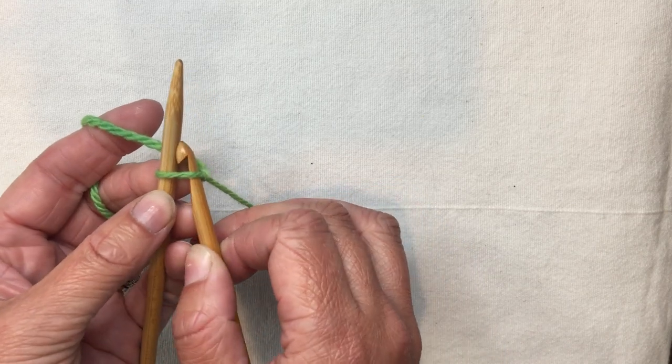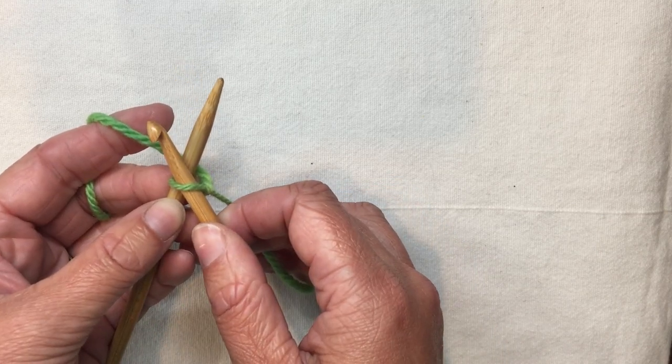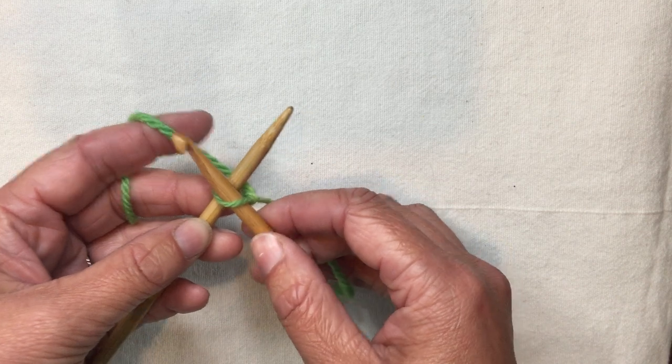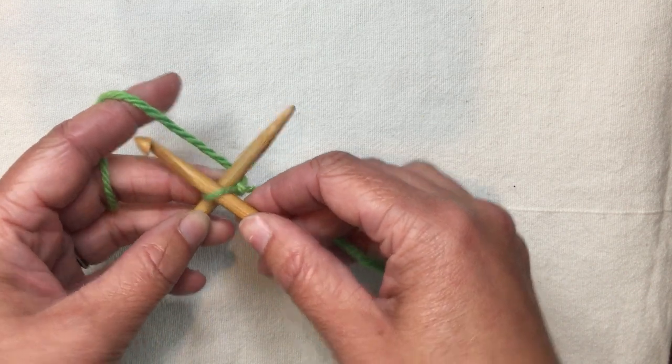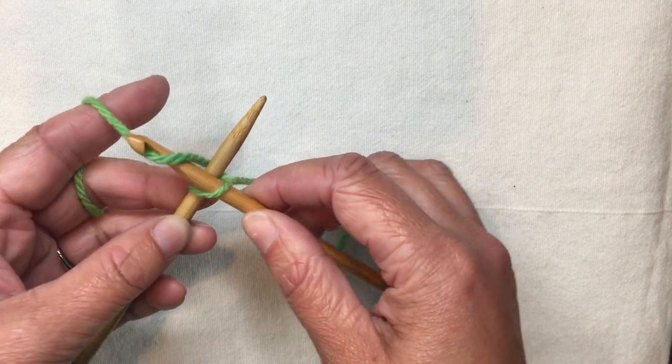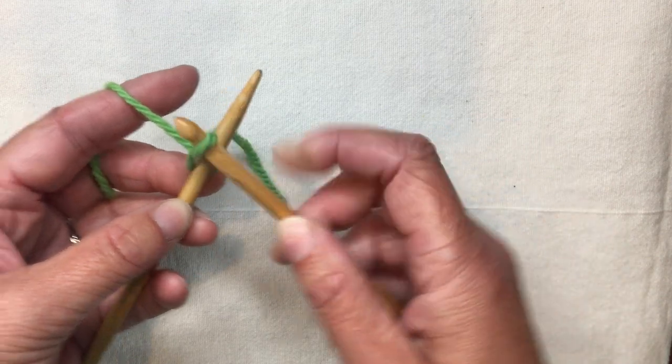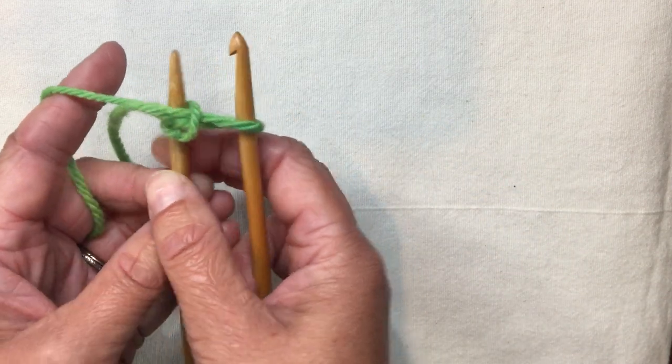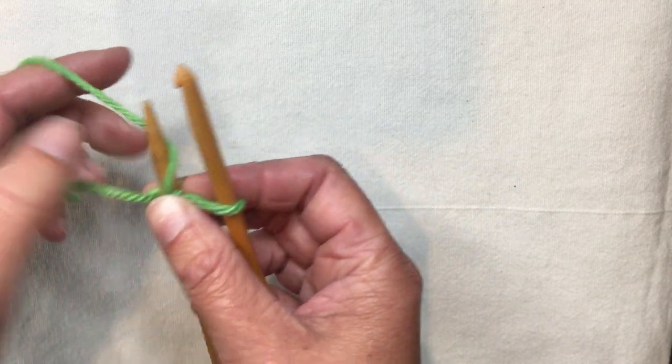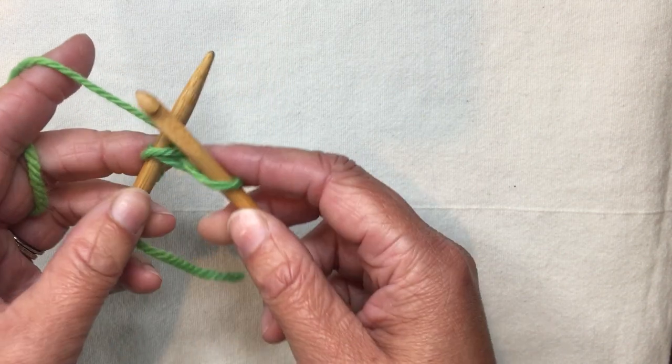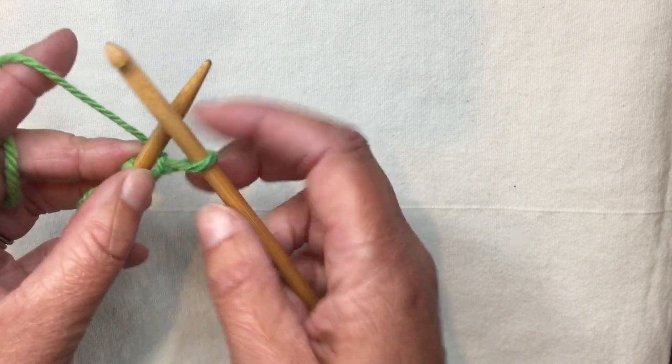I'm going to put my hook into my loop and end up with an X shape with the hook in front. The hook is going to go to the left of and then behind the yarn and draw a loop through. Then I need to move my yarn to the back and we repeat. Don't worry if these are starting to twist around the needle, they'll get better in a second.